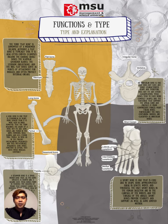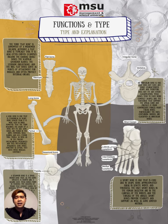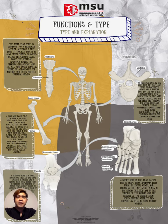Next is the flat bone. Although a flat bone is typically thin, it is also often curved. Examples include the cranial skull bones, the scapulae or shoulder blades, the sternum or breastbone, and the ribs. Flat bones serve as points of attachment for muscles and often protect internal organs.